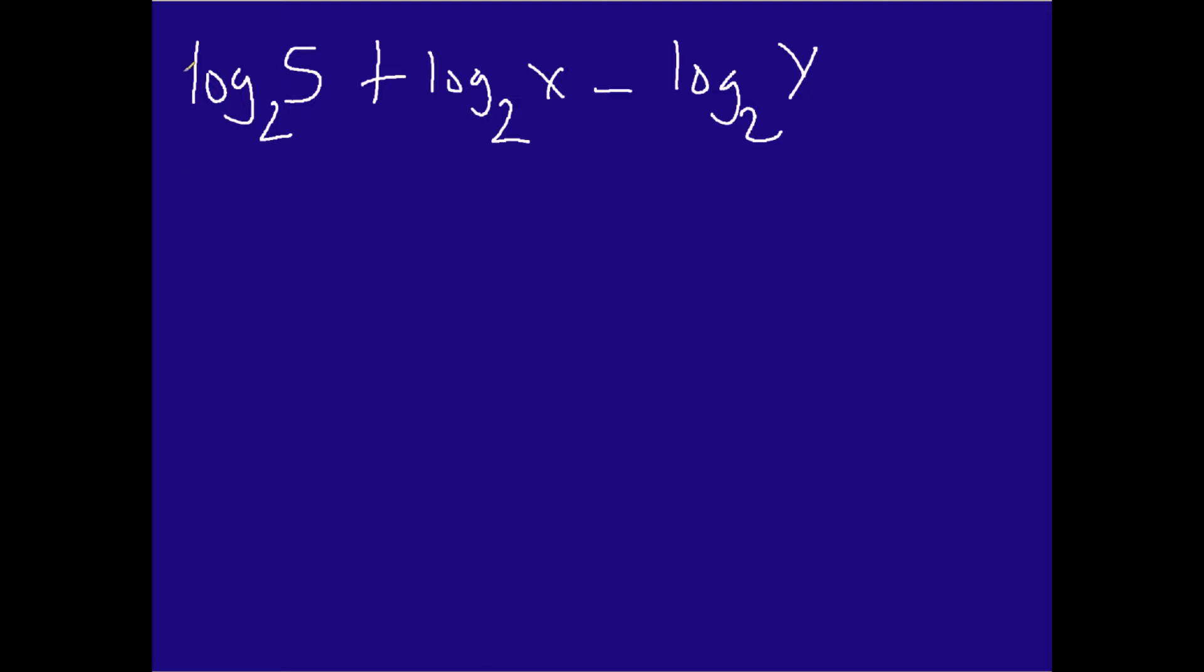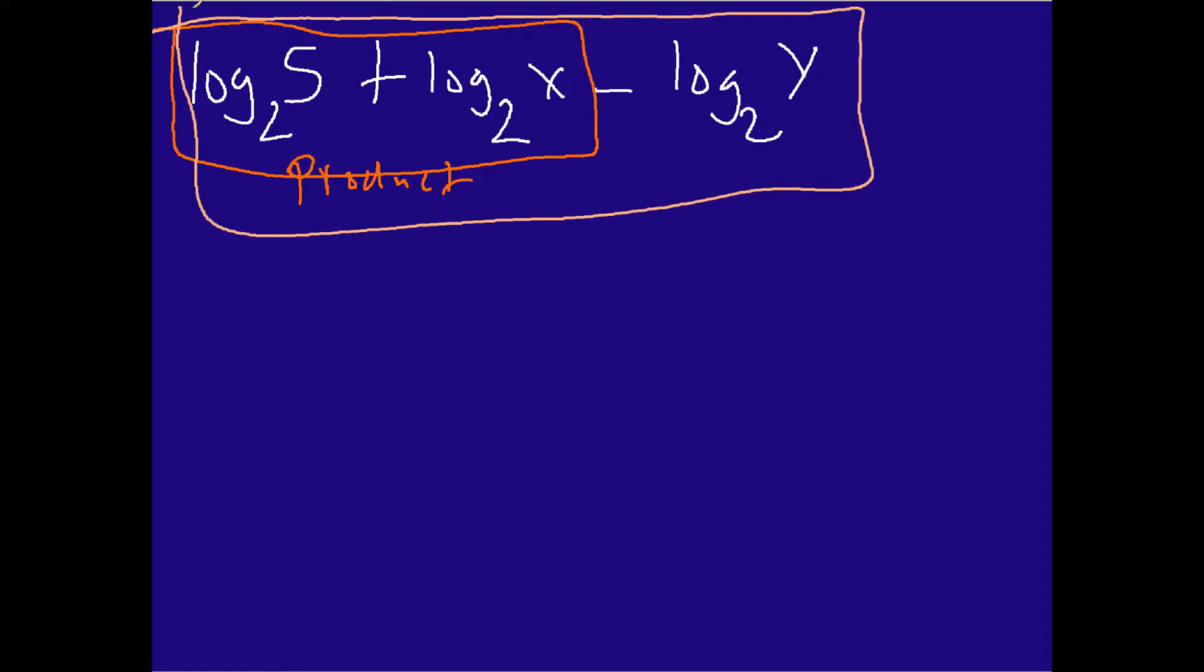In other words, just to make it clear, I'm going to use the product property right here. And then once I simplify this, I will repeat this process with the whole thing, and I will use the quotient property for the whole thing. This will make a lot more sense when you see the actual example. So let's go ahead and do that.